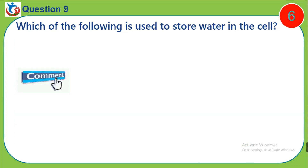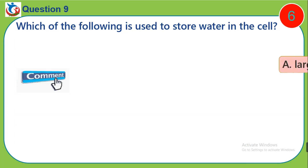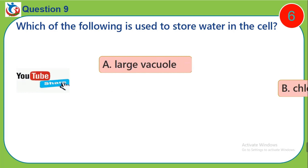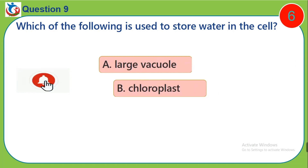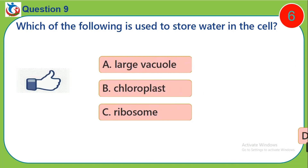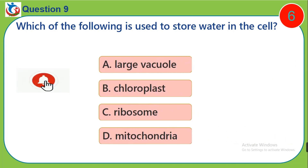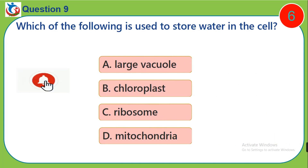Question 9. Which of the following is used to store water in the cell? A. Large vacuole. B. Chloroplast. C. Ribosome. D. Mitochondria.